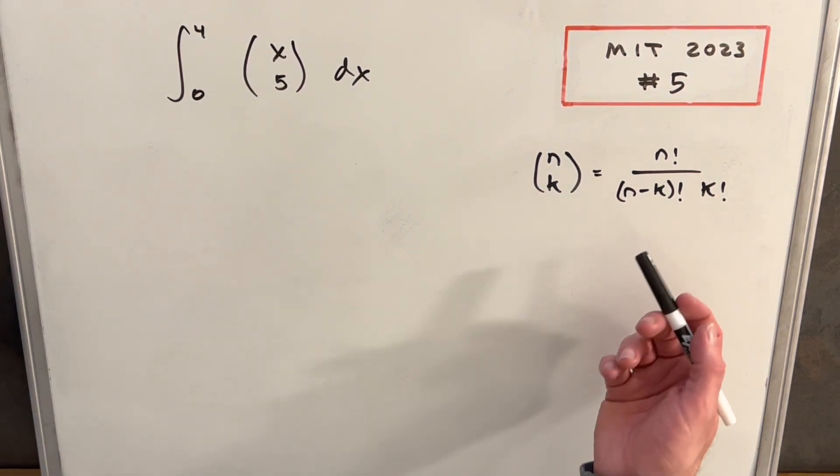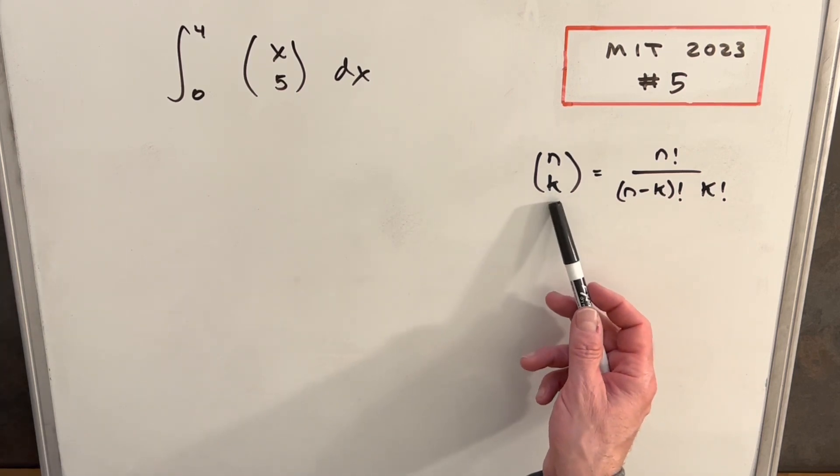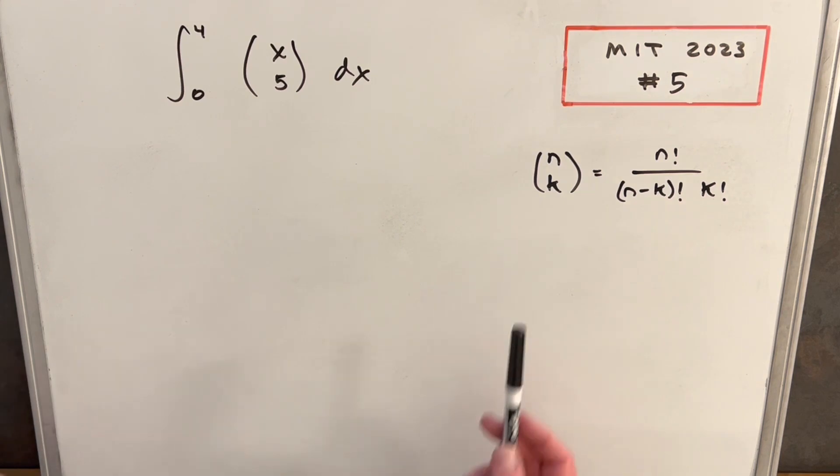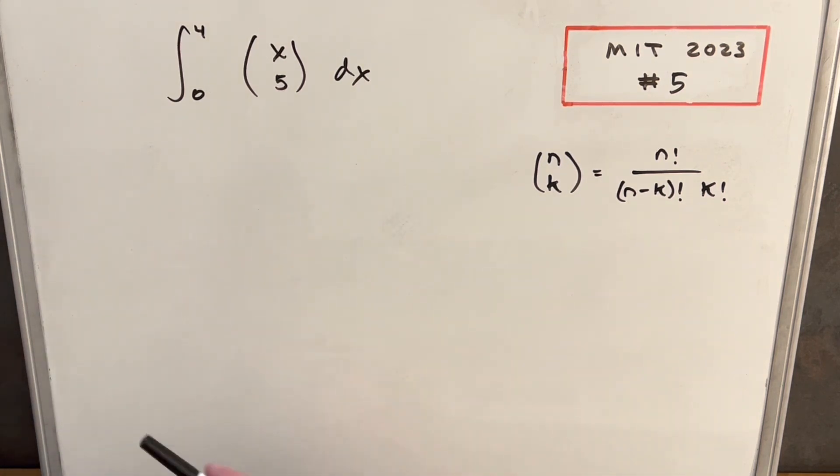The first thing we're gonna need is this definition over here to the right of the binomial coefficient. You can call this like n choose k. This is gonna let us write this in terms of factorials. We'll be able to rewrite our integral and get it to be a little more usable. So let's do that to start.